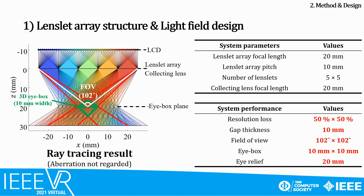However, as the nature of the light field display using a lens lid array, it is inevitable to sacrifice the resolution of the display. It is quite common in light field displays to achieve only a few percent of the original display resolution. In this paper, we derived the optimal system parameters using light field analysis so that the resolution loss is only 50%. At the same time, we achieved only 10 mm of the necessary thickness, 102 degrees of wide field of view, 10 mm of wide eye box, and 20 mm of ergonomic eye relief.